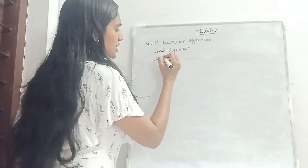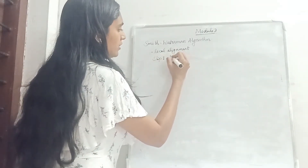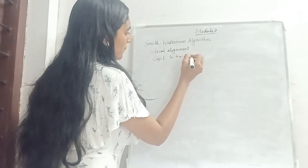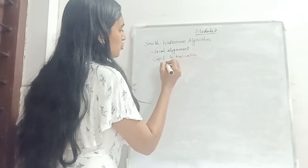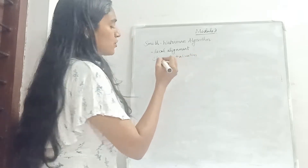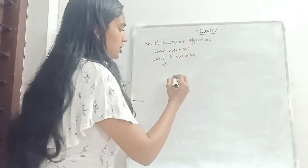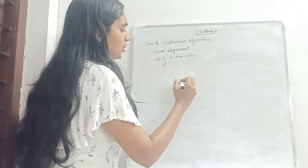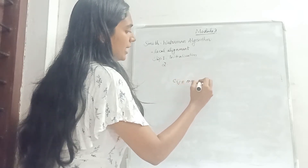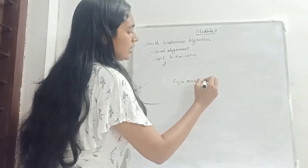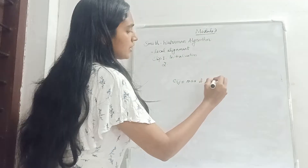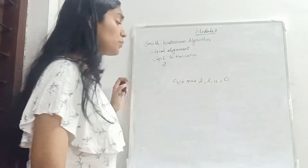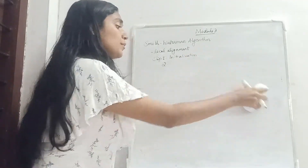Step 1: Initialization. Step 2: Scoring. We are going to take the max of diagonal, left, up, and 0. This means that here in the matrix we consider all four options.